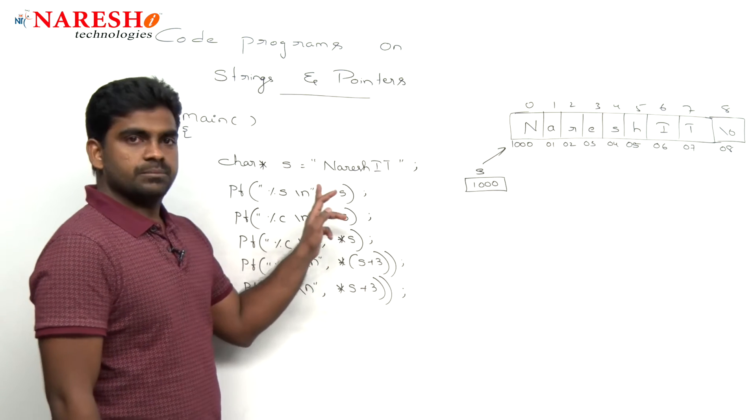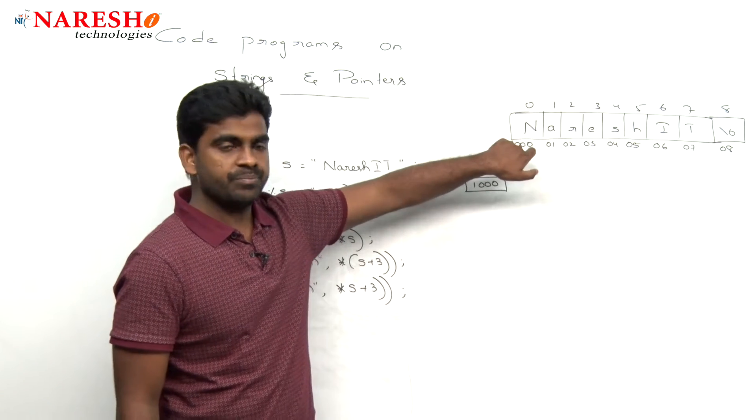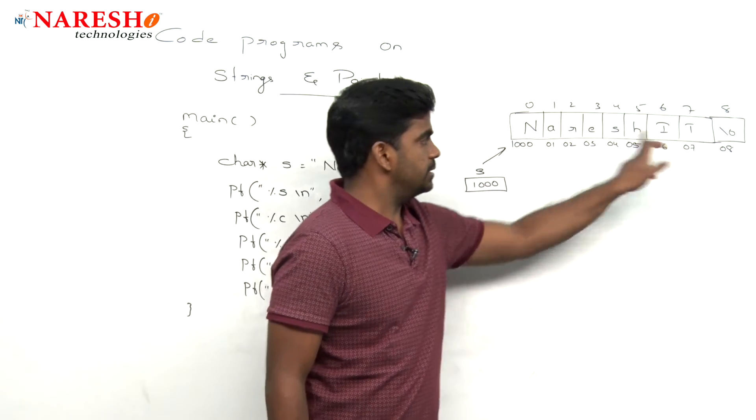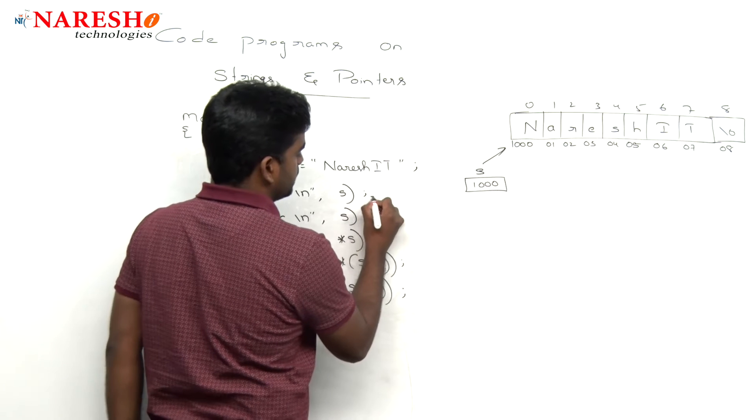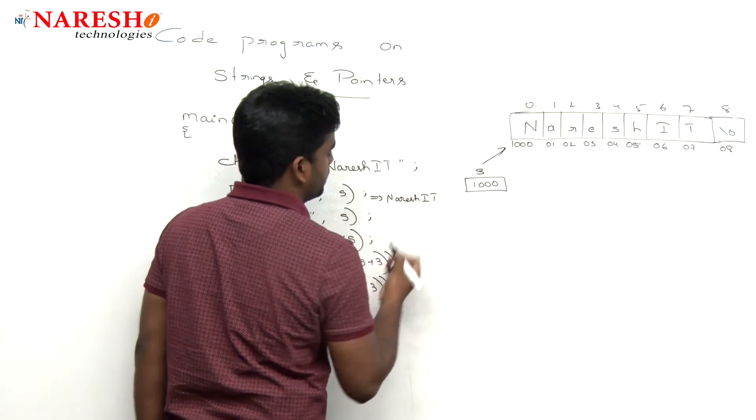That is what percentage S. So whenever we are giving the base address 1000, up to that null character, the complete string will be displayed here. So Naresh IT will be displayed.